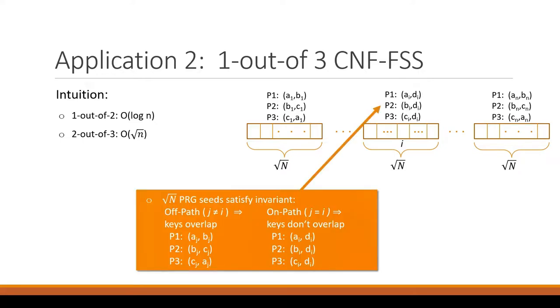And that's the key invariant here, where for the on-path block, the keys overlap this way, and for the off blocks, they overlap in a different way.